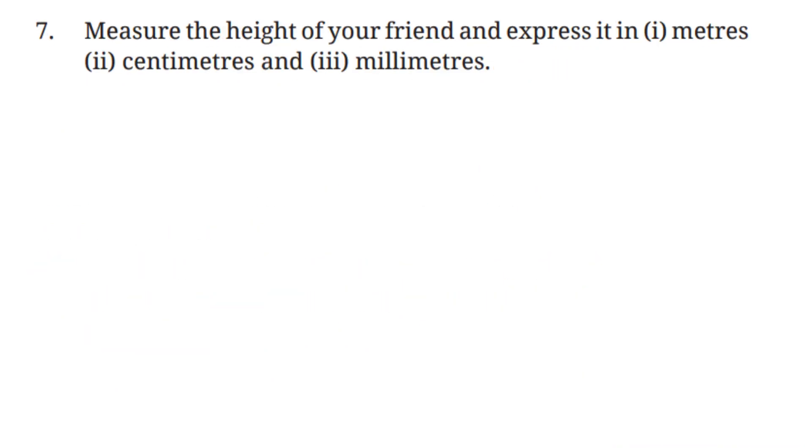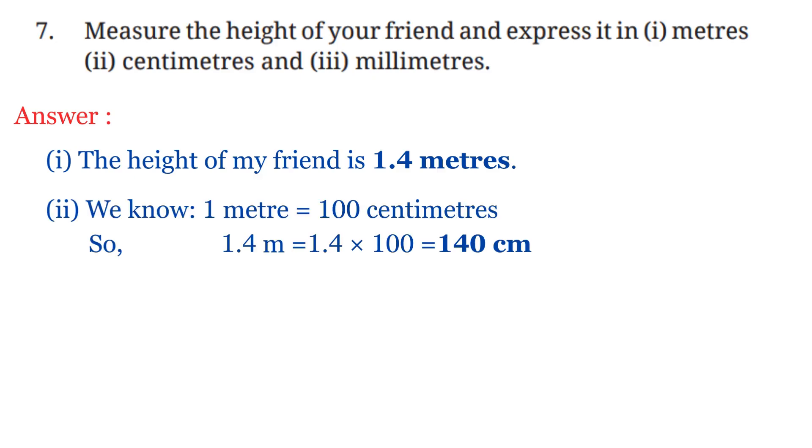Question No. 7: Measure the height of your friend and express it in meters, centimeters, and millimeters. So the height of my friend is 1.4 meters. We know 1 meter equals 100 centimeters. That's why 1.4 meters equals 1.4 times 100, which equals 140 centimeters. And we know 1 meter equals 1000 millimeters. So 1.4 meters will be equal to 1.4 times 1000, which equals 1400 millimeters.